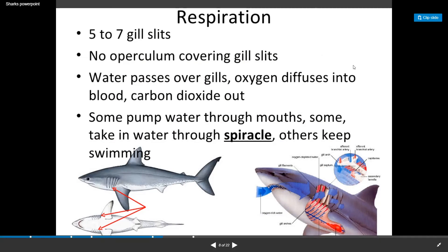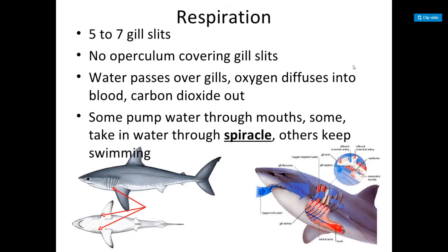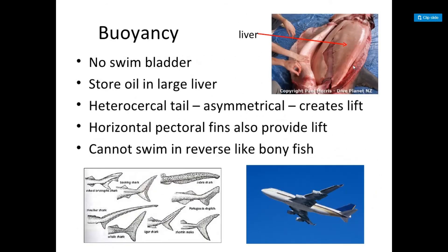Respiration: they have five to seven gill slits and no operculum covering them. Water passes over the gills, oxygen diffuses into the blood, and carbon dioxide comes out. Some pump water through their mouths, some take in water through spiracles, and others keep swimming — those are your ram ventilators.